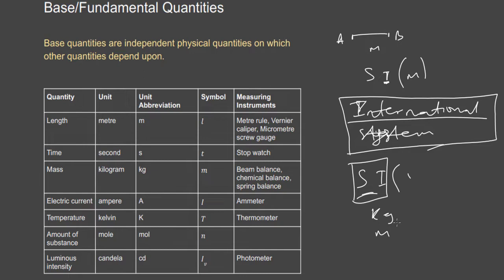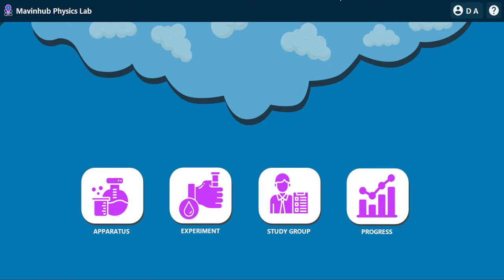I'm going to focus on length, time, and mass — how to measure them and how to read the instruments. I'm going to use a software known as Mavinhof Physics Lab to explore that. Mavinhof Physics Lab provides a platform where one can perform virtual experiments and virtually explore physics apparatus.